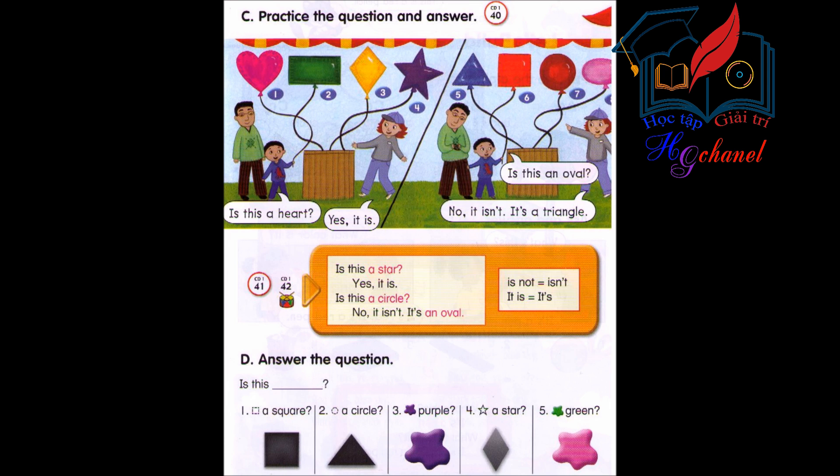Track 41. Is this a star? Yes, it is. Is this a circle? No, it isn't. It's an oval.